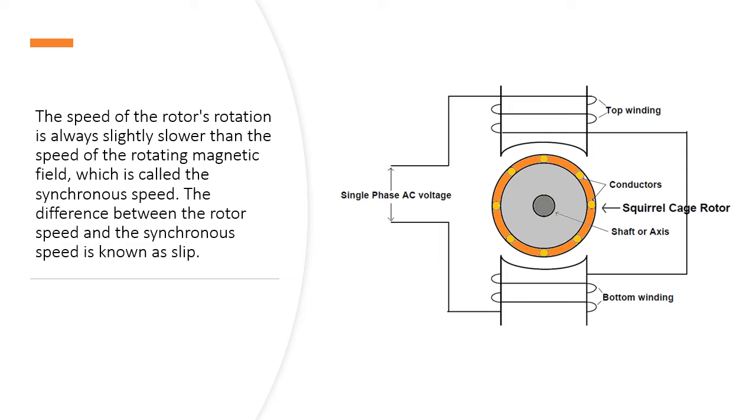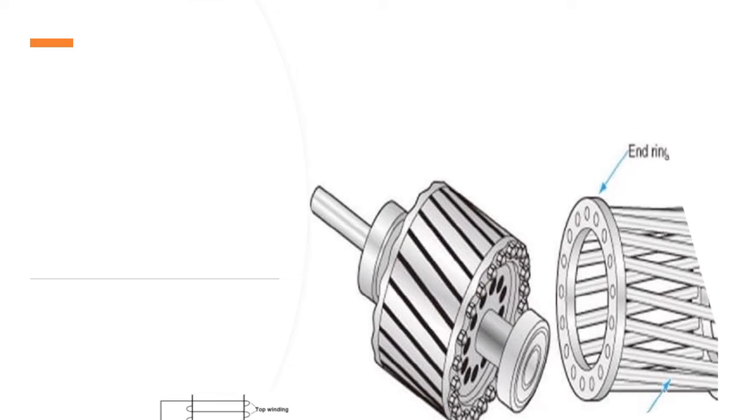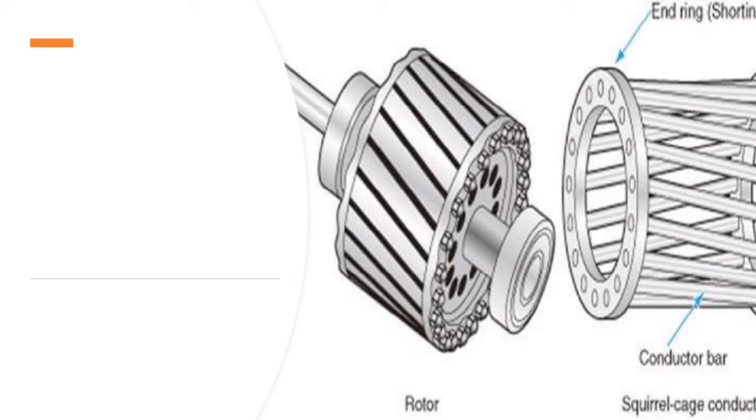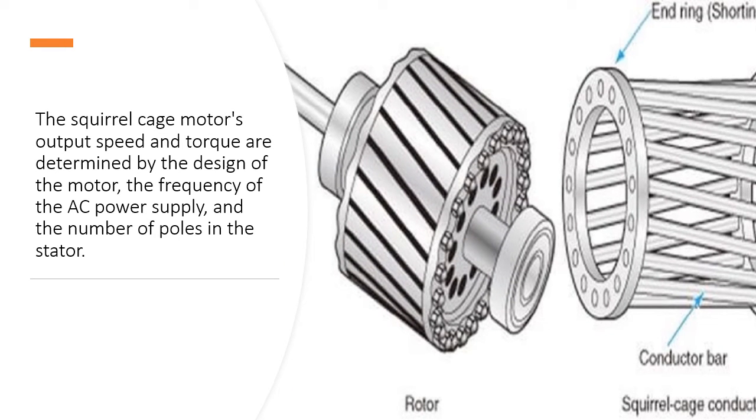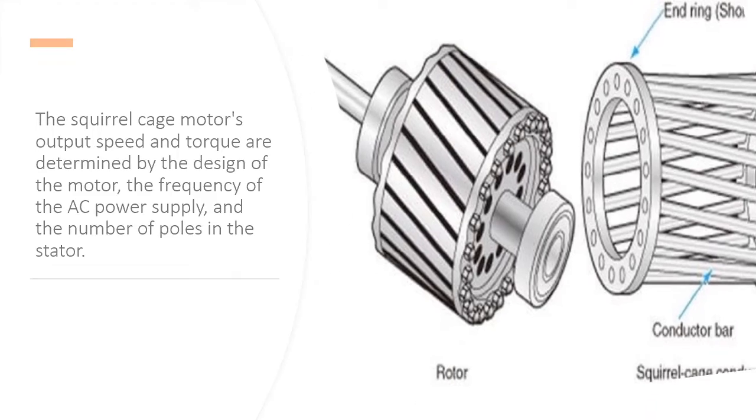The difference between the rotor speed and the synchronous speed is known as slip. The squirrel cage motor's output speed and torque are determined by the design of the motor, the frequency of the AC power supply, and the number of poles in the stator.